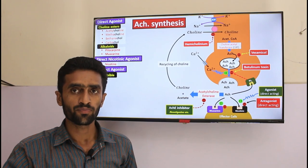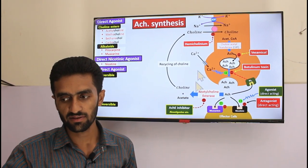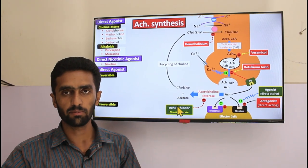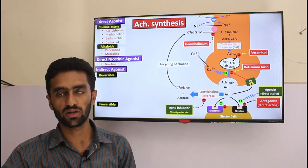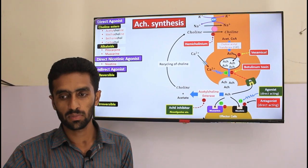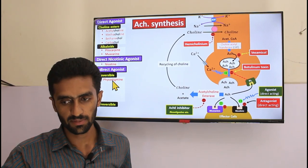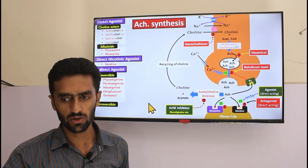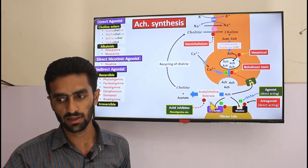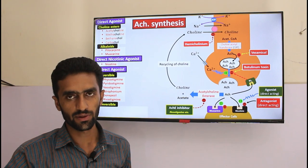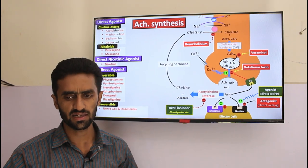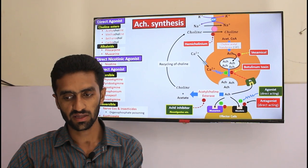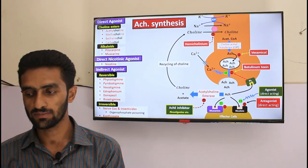For indirect agonists, we have reversible and irreversible types. Reversible agents inhibit acetylcholinesterase reversibly — these include physostigmine, neostigmine, pyridostigmine, edrophonium, donepezil, and rivastigmine. For the irreversible type, examples are nerve gases and insecticides causing organophosphate poisoning, and echothiophate, rarely used clinically for glaucoma.